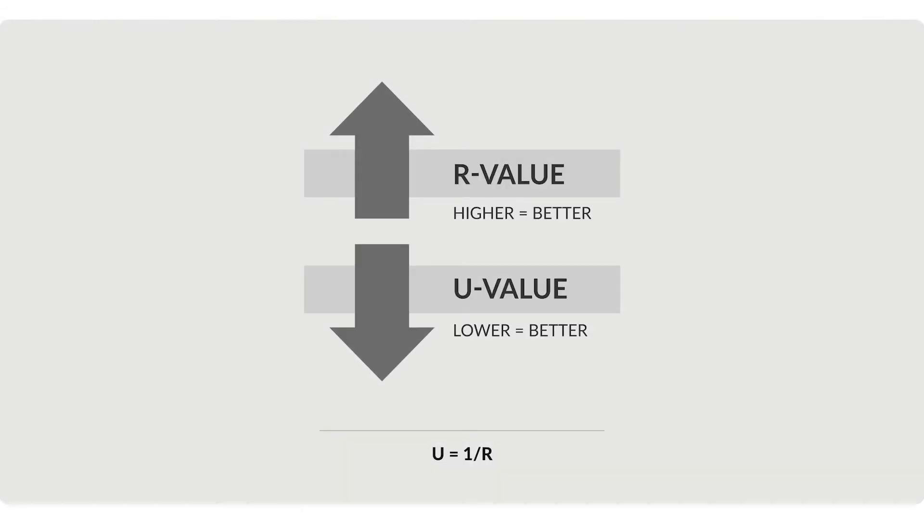A higher U-value indicates a higher heat flow and a lower U-value indicates a lower heat flow. So a lower U-value is better for thermally insulating a building.